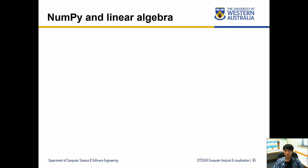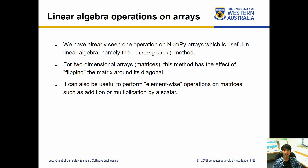In this video we'll be covering NumPy and linear algebra. Linear algebra operations on arrays are important because linear algebra involves a lot of matrices, and NumPy arrays handle matrices very well. We've already seen the transpose method, which transforms a two-dimensional array by flipping it around its diagonal. It can also be useful to perform element-wise operations on matrices such as addition or multiplication by a scalar.